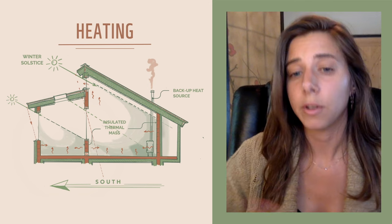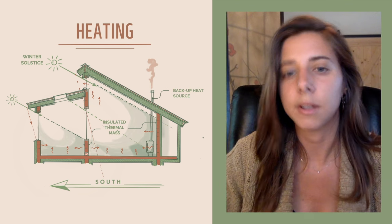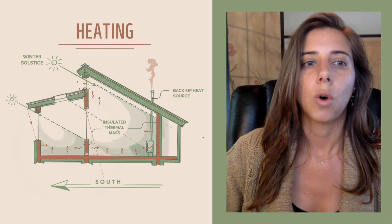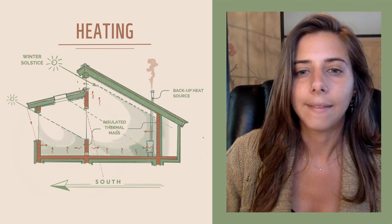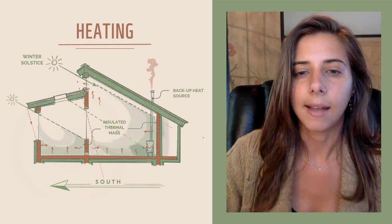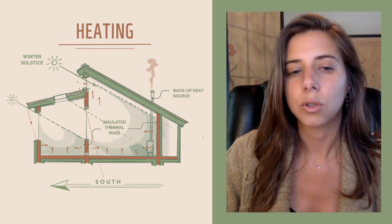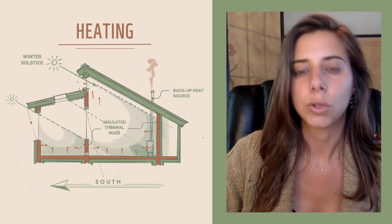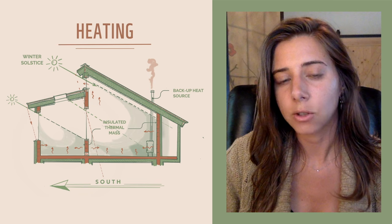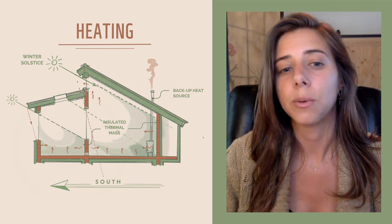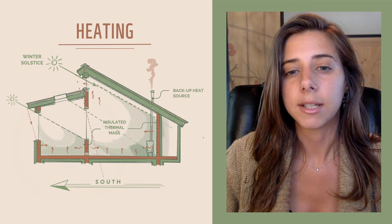So if you're in the southern hemisphere that's going to be north, and if you're in the northern hemisphere that's going to be south. We want our living areas to be more oriented on that solar gain side and keep our utilities to the north. As you can see in this picture on the left, the most heat is closer to those windows and as you get further back towards the back of the house, further away from the sun, that's where it starts to get a little bit cooler.